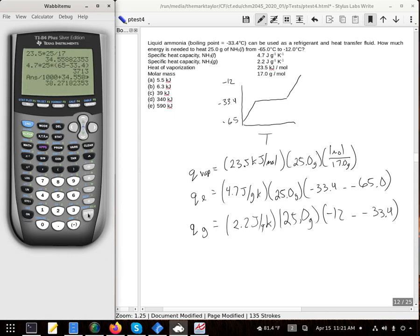That gives us 38, and now we need to do this bottom one. So 2.2 times 25 times in parentheses 33.4 minus 12, divide this by 1000 and add that to the 38.